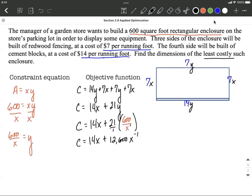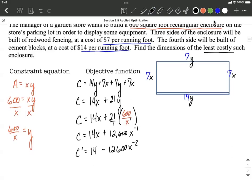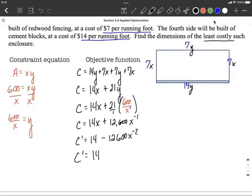If we're trying to minimize the cost, we'd like to find any critical numbers or critical values on this. To do that we want to take the first derivative using the power rule. That's going to be negative 12,600x to the negative second power, which can be rewritten as C' = 14 - 12,600 over x squared. Critical numbers occur either whenever the first derivative is undefined, which if we plugged in zero it would be, or when the first derivative equals zero. What if I set the first derivative equal to zero?